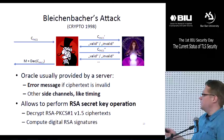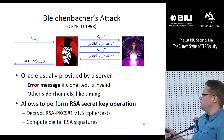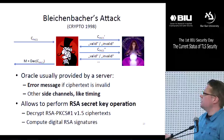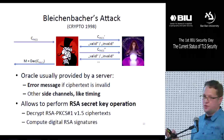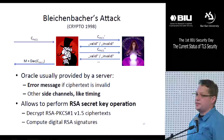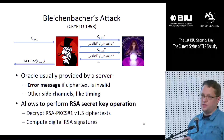Bleichenbacher's attack is also slightly stronger than described. It does not only allow an attacker to recover an encrypted message, but actually enables a full RSA secret key operation. This means it enables the attacker to decrypt ciphertexts, but also to do other things — like computing RSA signatures.